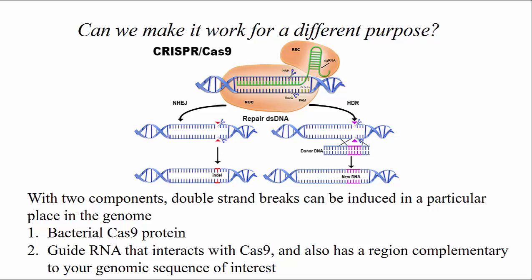In eukaryotic cells, there are very robust and well-studied mechanisms to repair damaged DNA. The idea is that if you bring in the bacterial Cas9 protein and a guide RNA that will direct that nuclease to a particular region of the genome based on sequence similarity — where you design that guide RNA to bind — then you could make that Cas9 nuclease make a double-stranded cut at a particular place in the genome.